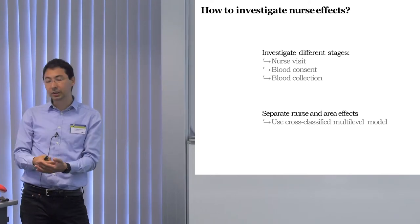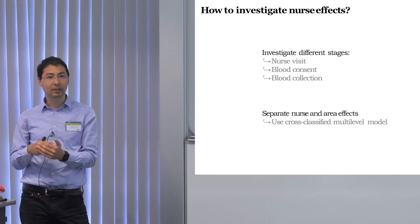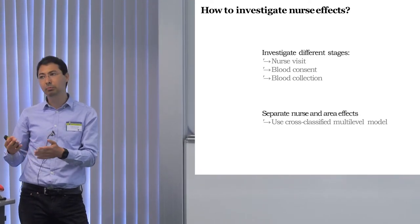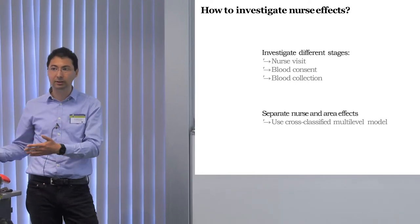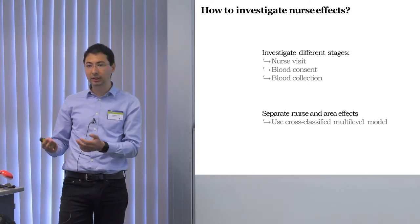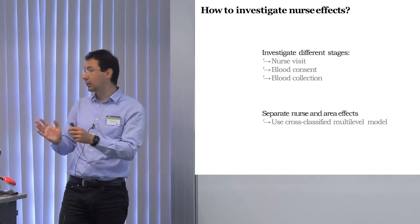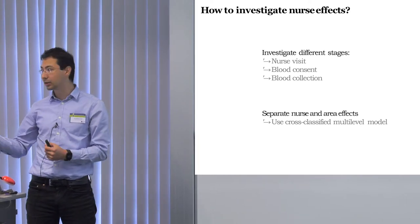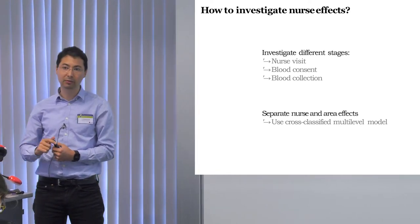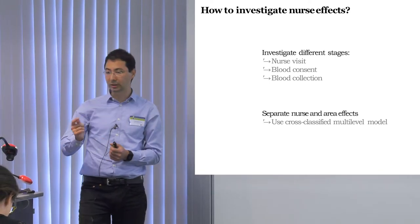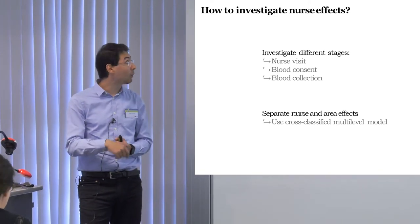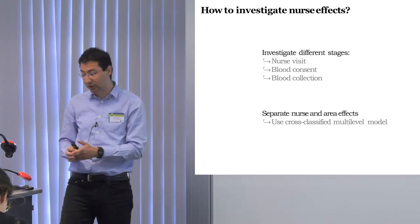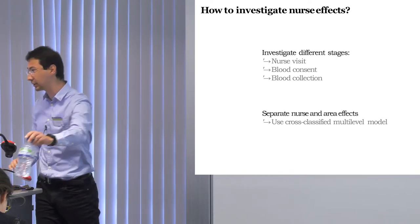On the other hand, getting consent during the nurse visit might be related to whether people trust the state or trust the nurse or the agency — so different mechanisms than those that lead to missingness for the nurse visit itself. Finally, blood collection might have different mechanisms: once they arrive, they may not be able to collect data because the participant is obese, or maybe because the nurse is just not very good at collecting such data.